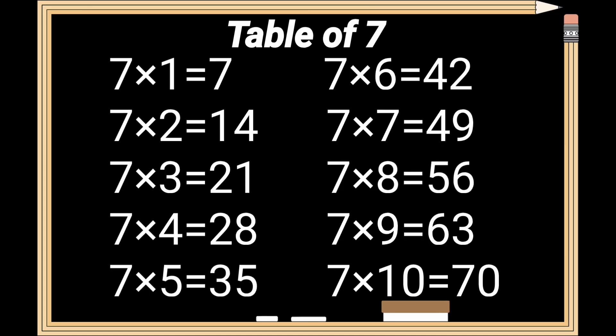Table of 7 review. 7 times 1 is 7. 7 times 2 is 14. 7 times 3 is 21. 7 times 4 is 28. 7 times 5 is 35. 7 times 6 is 42. 7 times 7 is 49. 7 times 8 is 56. 7 times 9 is 63. 7 times 10 is 70.